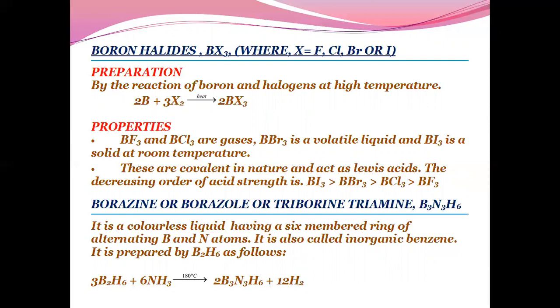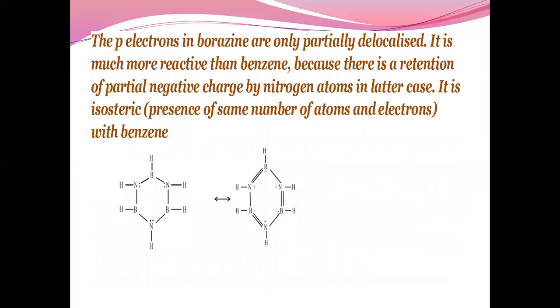Borazine or borazole or triborane triamine: It is a colorless liquid having a six-membered ring of alternating B and N atoms. It is also called inorganic benzene. It is prepared by B2H6 as follows. The pi electrons in borazine are only partially delocalized. It is much more reactive than benzene because there is retention of partial negative charge by nitrogen atoms in borazine. It is isostructural, having same number of atoms and electrons with benzene.